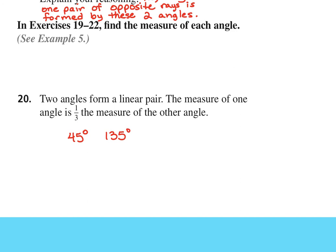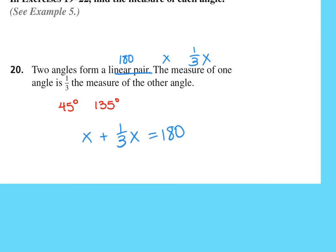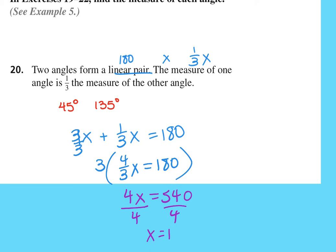Problem 20: Two angles form a linear pair, meaning they sum to 180. One angle's measure is one-third the measure of the other. Setting the first angle as X and the other as one-third X: X plus one-third X equals 180. This is one X plus one-third X, or three-thirds plus one-third, giving four-thirds X equals 180. Multiplying by 3 gives 4X equals 540. Dividing by 4, X equals 135.